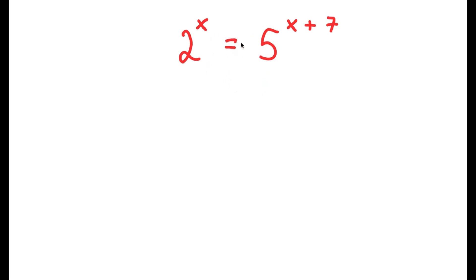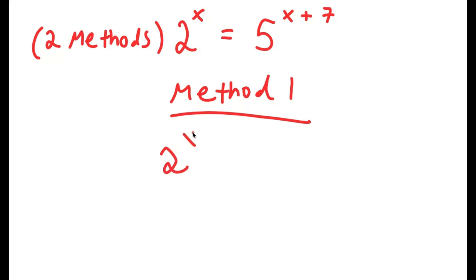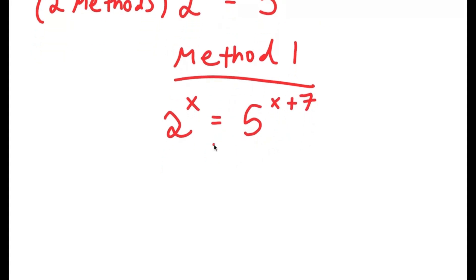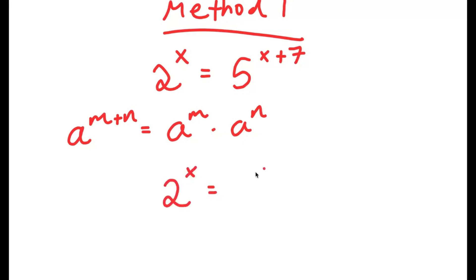In this problem, I have 2 to the power of x is equal to 5 to the power of x plus 7. I actually have two methods to solve this problem, so make sure to stick around to see both. For method 1, if I have something in the form a to the power of m plus n, this is equal to a to the power of m times a to the power of n. So 5 to the power of x plus 7 can be written as 5 to the power of x times 5 to the power of 7.